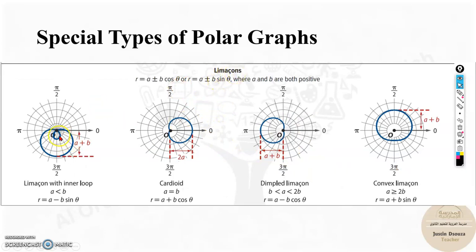Now, limassons are something like this. You can see, sometimes there will be a curve over here, there will be a small inner circle. Sometimes it will be just like a heart shape. Here is the standard formula. Whenever you have r equals a plus or minus b cos theta, or it's sine theta over here, then you will get such graphs.